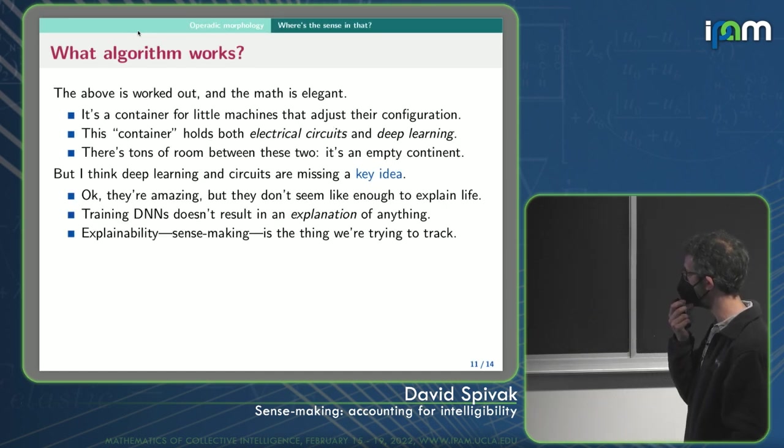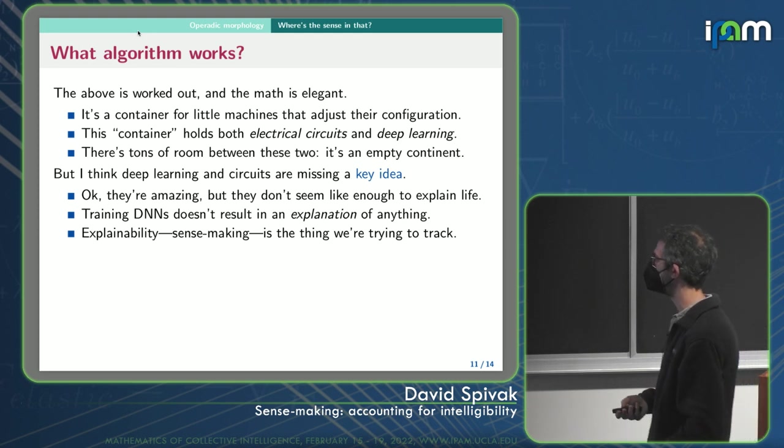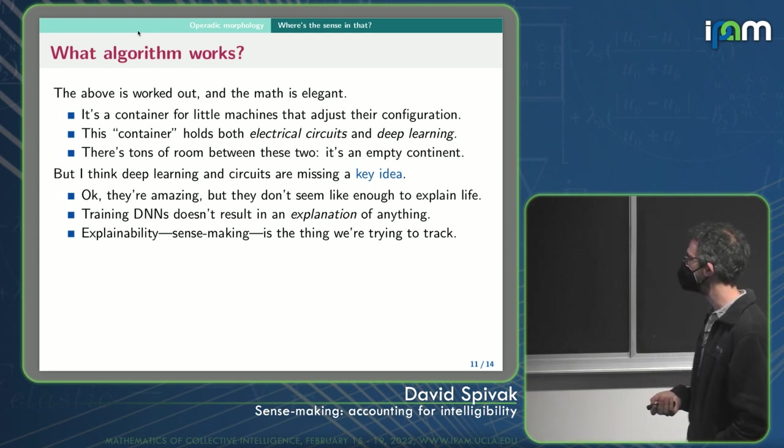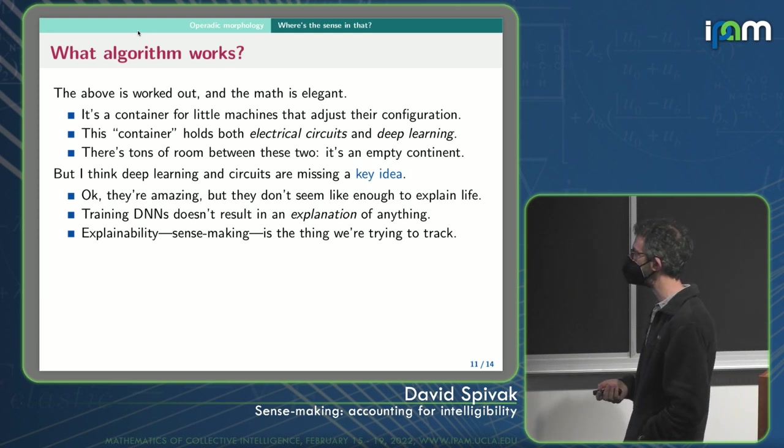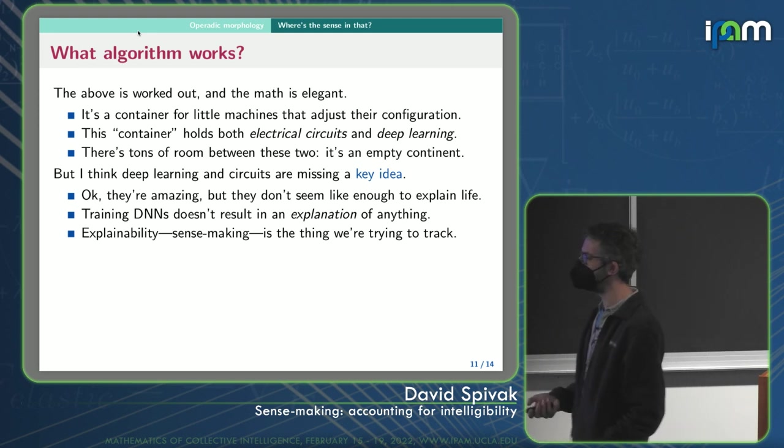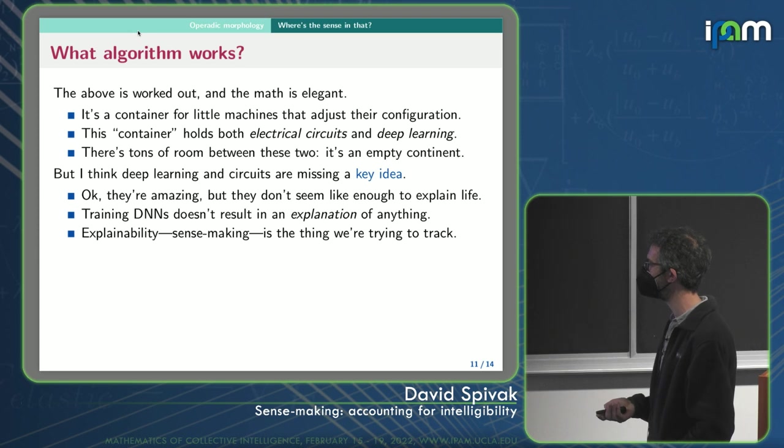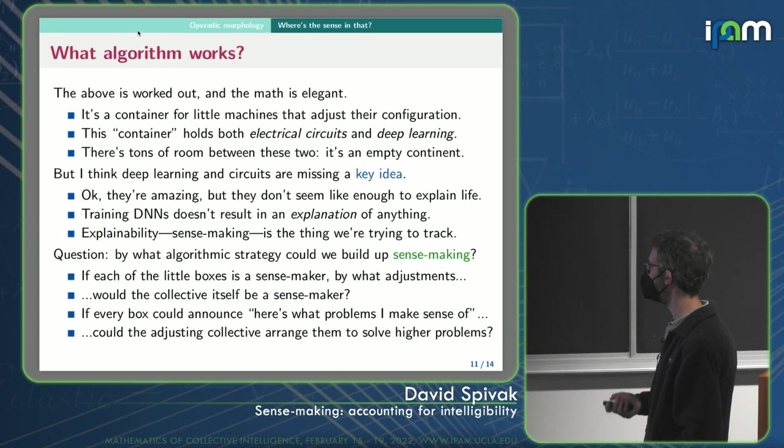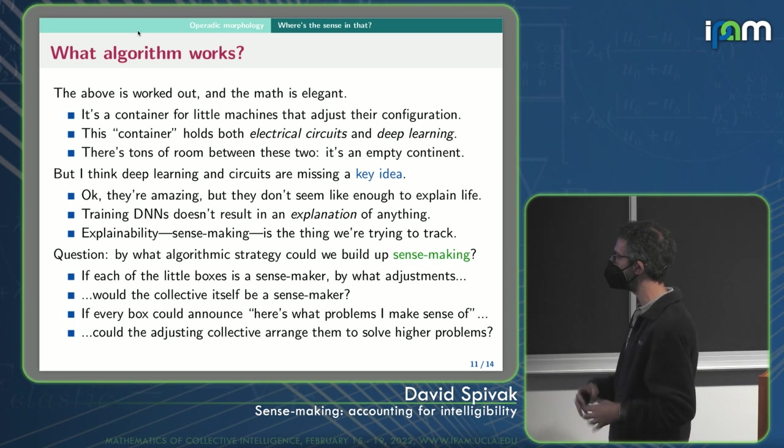So I think there's a key idea missing. Both circuits that make my phone work and deep neural networks are amazing, but they don't seem like they're going to explain life. It doesn't seem like they're going to explain really anything. Deep neural networks is a problem. And so sense making is the thing we're trying to talk about. So I think we're missing something and I don't know it, but I'm asking by what algorithmic strategy could you build up sense making?